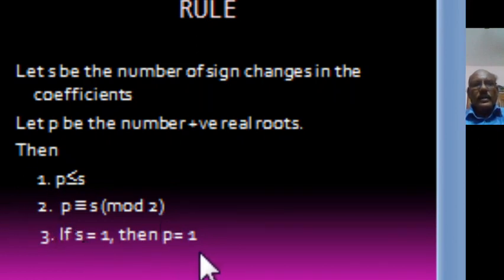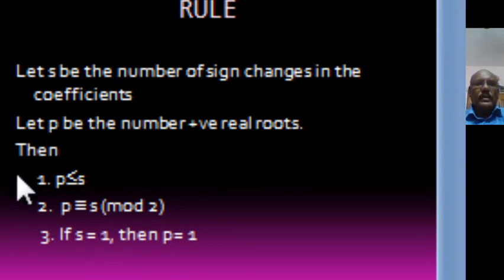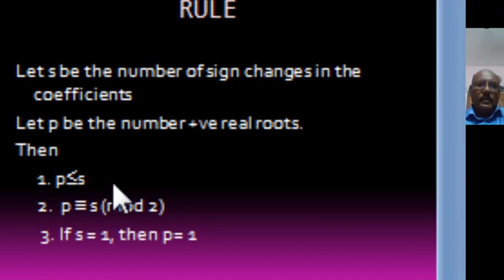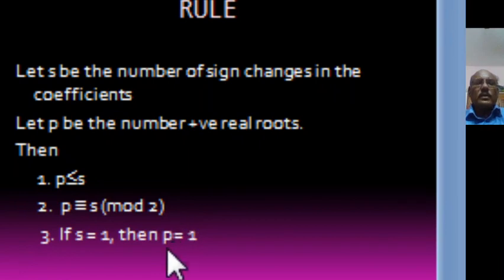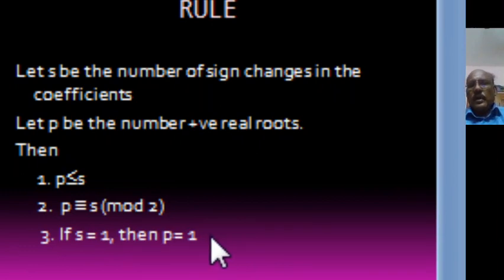If S is equal to 1, then P is equal to 1. Because if S is equal to 1, by the first condition we have P is less than or equal to 1, so either P equals 0 or P equals 1. And at the same time, P must be congruent to S modulo 2. If S equals 1, then P must be congruent to 1 modulo 2. So P is less than or equal to 1 and P is congruent to 1 modulo 2 means P equal to 1 is the only possible value. So when S is equal to 1, the number of positive roots is exactly 1.